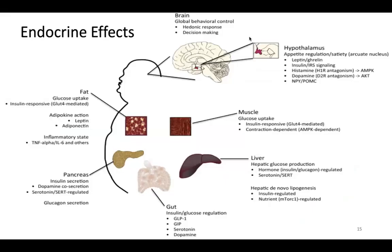Endocrine effects. Older typical antipsychotic drugs, as well as risperidone and paliperidone, produce elevation of prolactin. Newer antipsychotics such as olanzapine, quetiapine, and aripiprazole cause no or minimal increases in prolactin and reduce the risk of extrapyramidal system dysfunction and tardive dyskinesia, reflecting diminished D2 antagonism.